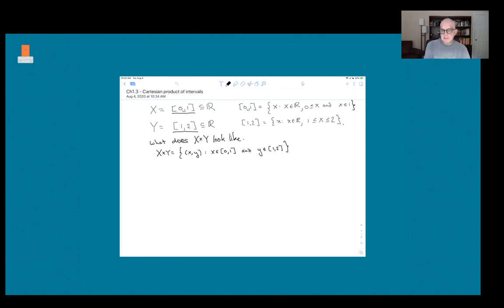And that's a perfectly good description of the Cartesian product, but we can make something which is maybe a little bit more informative if we take advantage of the fact that X cross Y is a subset of R cross R. And why is that? Well, R cross R is the set of all ordered pairs x and y where x is in R and y is in R.